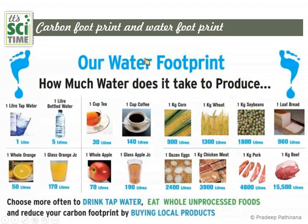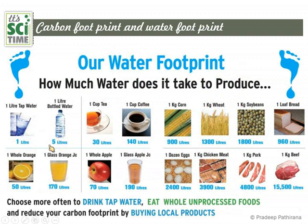What is water footprint? Similarly, when we make a product, how much water does it take to produce? For one liter of tap water, the water footprint is one liter, because we take it directly. But for one liter of bottled water, it takes five liters to produce — during the filtration process, some water is wasted. The people who work to bottle it and make the plastic also consume water, and all that water consumed during production is added to the footprint.